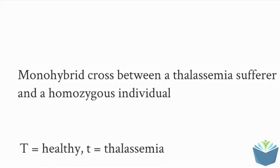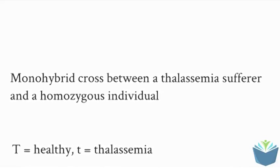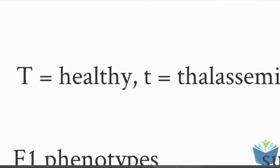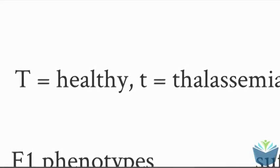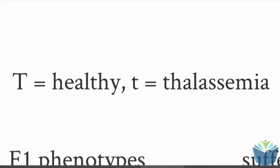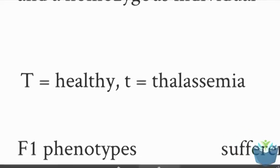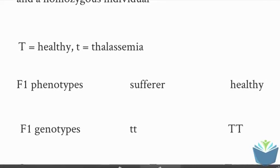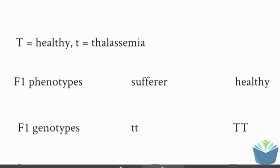So if we look at a monohybrid cross between a thalassemia sufferer and a homozygous individual. If we write down what the different alleles are, large T in this case, the dominant one is the healthy allele. The small t is the thalassemia allele. The two individuals are the sufferer and somebody who is healthy. So the F1 genotypes in this case will be small t, small t and big T, big T.